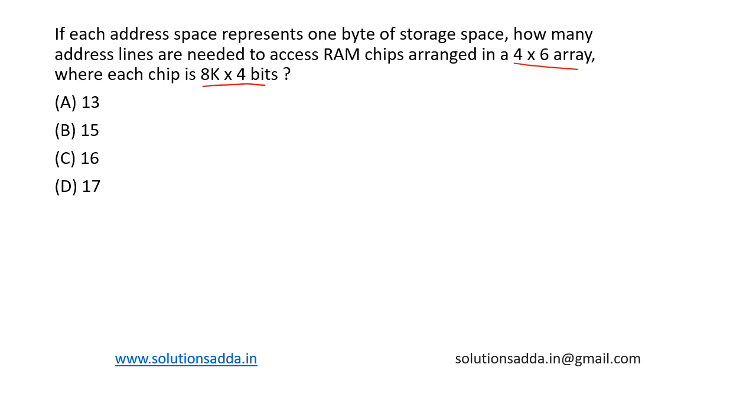Four options are given. So, size of each RAM chip is equal to 8K into 4 bits. This is equal to 2 to the power 13 into 2 square which is equal to 2 to the power 15 bits. This is equal to 2 to the power 12 bytes.